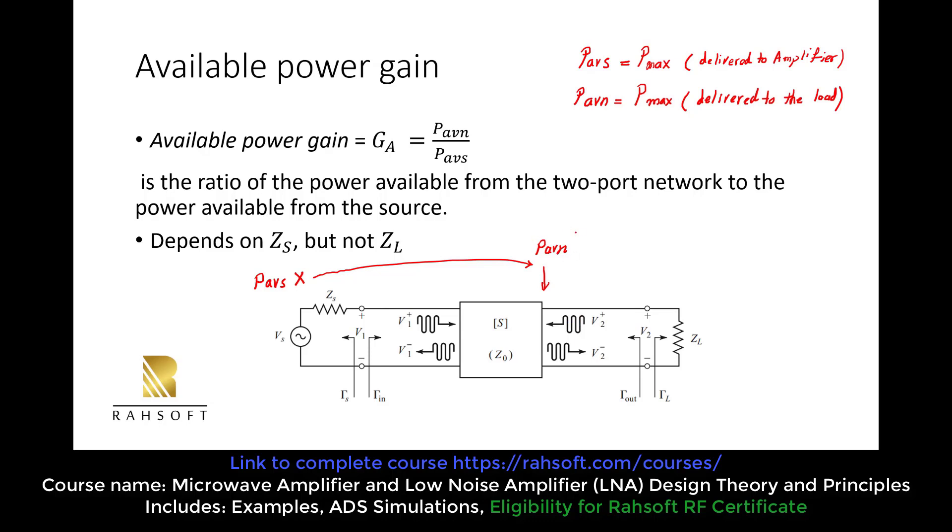So when we say the available power, the max power. So this is Pmax at the output of this network. And this Pmax is independent of ZL. It doesn't depend. We just want to have the matching case. If we have match, so when we have this delivery power, when the Zout is equal to ZL. So we are going to have this delivery, the max power delivery to ZL, but the value of this max is constant. It doesn't depend on this. But the situation depends.